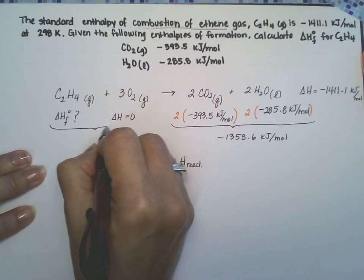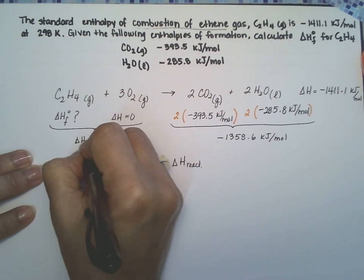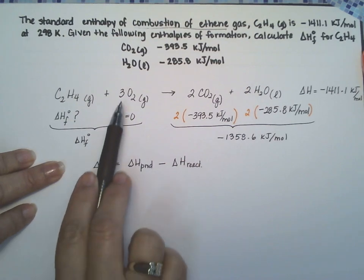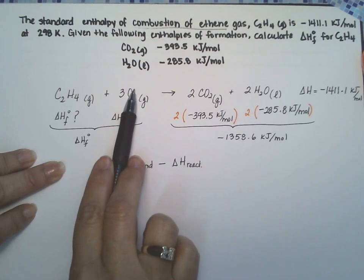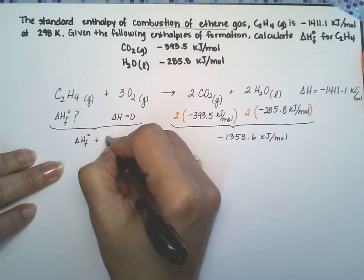The delta H of the reagents, that would be the delta H of formation of the ethene that we need plus zero because the oxygen has a zero so we don't even need that part.